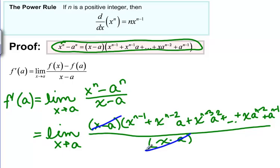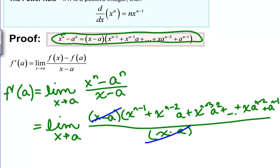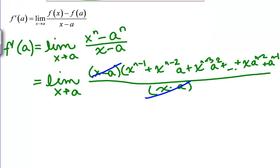But if we look at it, what this string is as X approaches A, we get A to the N minus 1 plus A to the N minus 2 times A, plus A to the N minus 3 times A squared, plus dot, dot, dot,